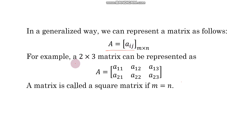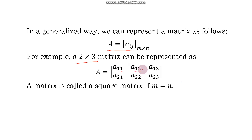If you take the example of a 2 by 3 matrix, look at this: the first element has subscript 1,1 — the first number represents the row number and the second represents the column number. So a_11 is the element of the first row and first column. Similarly, a_12 is the first row and second column, and a_13 is the first row and third column.